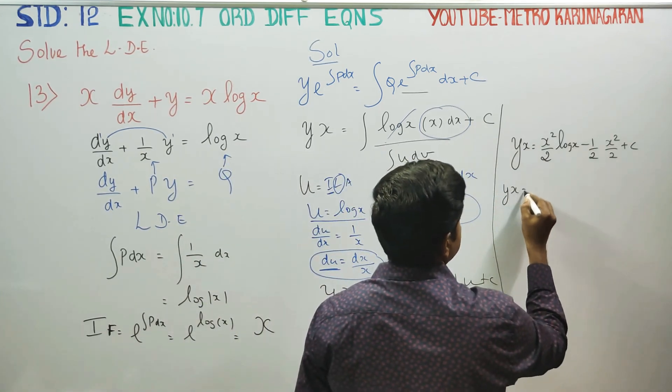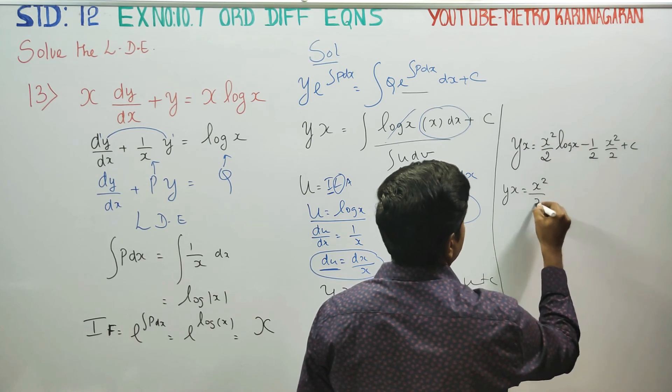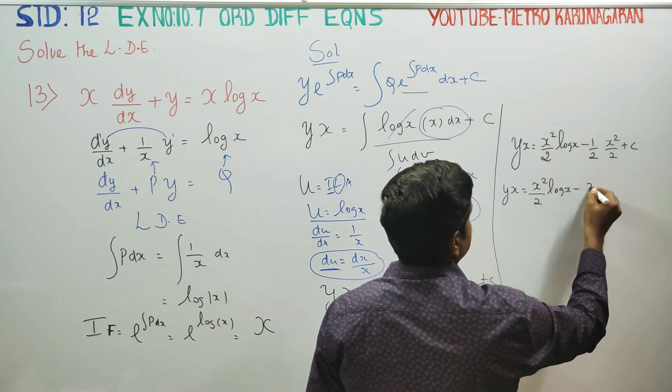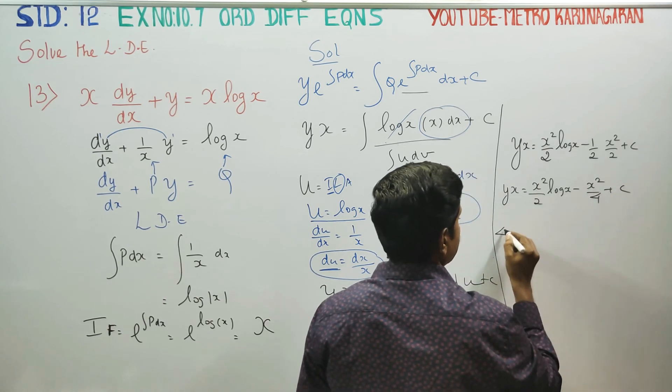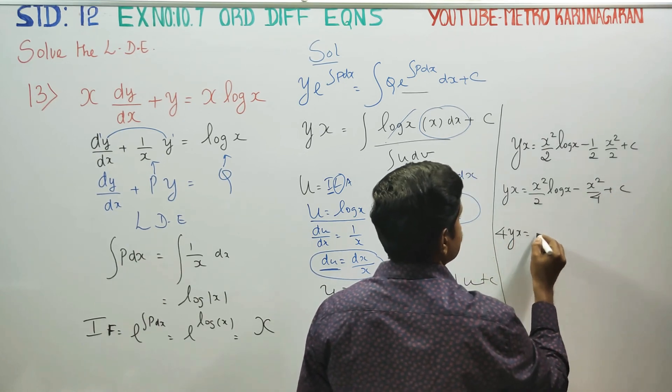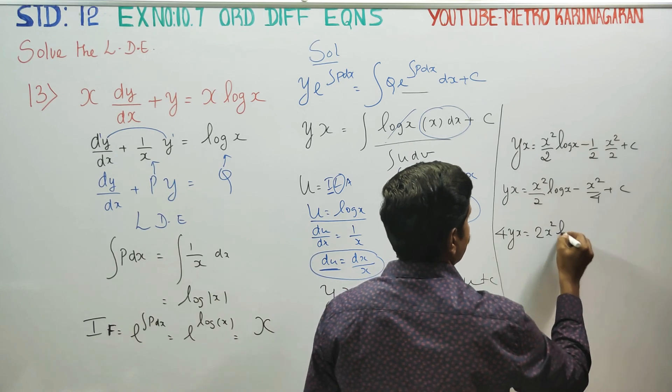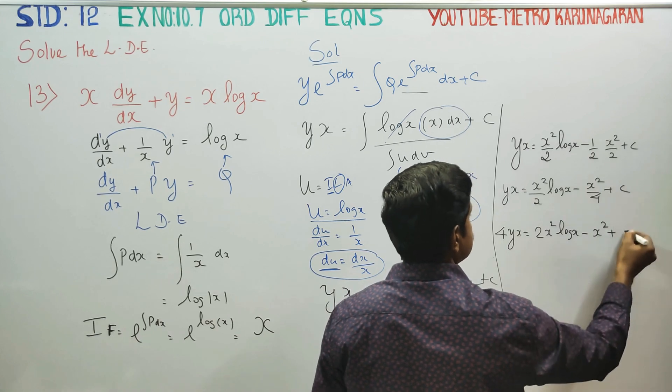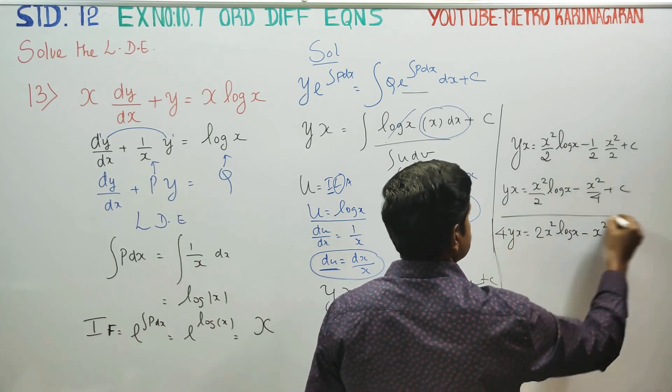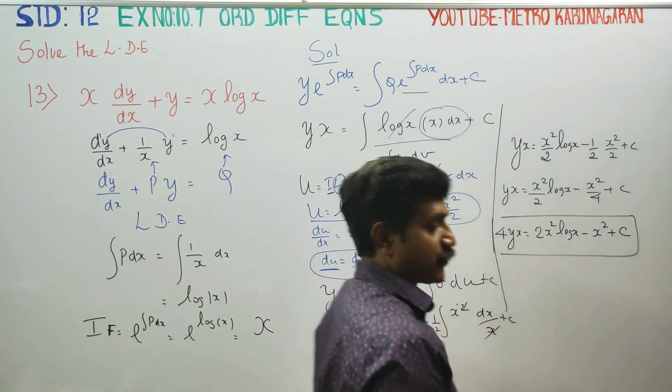yx is equal to x square by 2 log x minus x square by 4 plus c. That's the final answer.